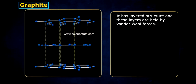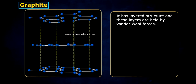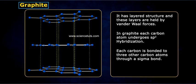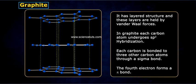Graphite has a layered structure and these layers are held by Van der Waal forces. In graphite, each carbon atom undergoes sp2 hybridization. Each carbon is bonded to three other carbon atoms through a sigma bond. The fourth electron forms a pi bond.